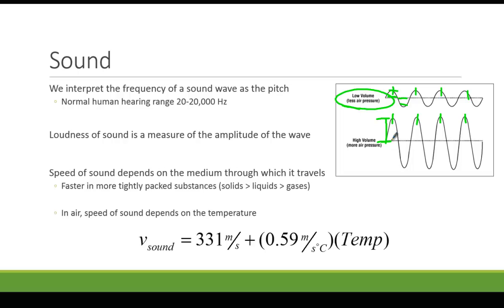So in a room temperature room, you would multiply 0.59 times the temperature in degrees Celsius, add that to 331, and that would give you the speed of sound in air.